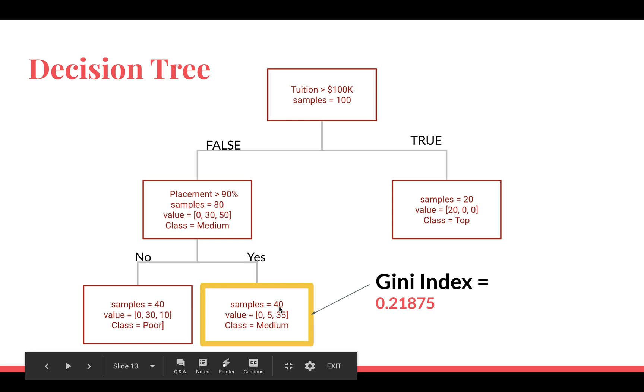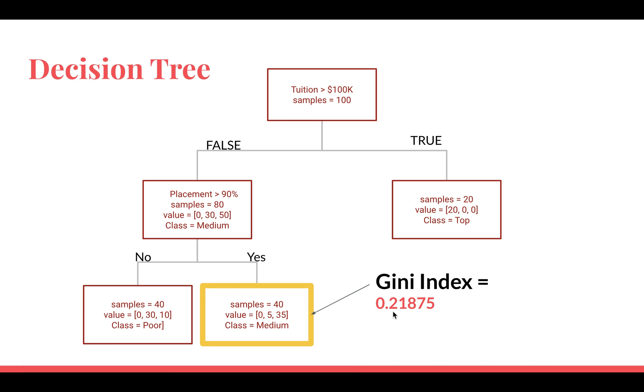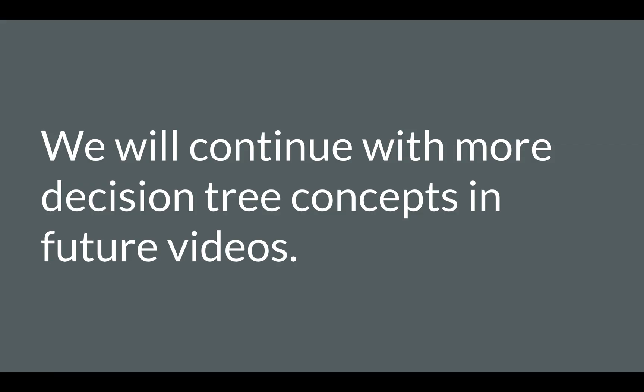Our decision tree stopped here but if needed it might have further split these two nodes and tried to create even more pure nodes which belong to only one class. But that's how you calculate the Gini Index and that's how it is used by the decision tree algorithm while deciding the splitting criteria.